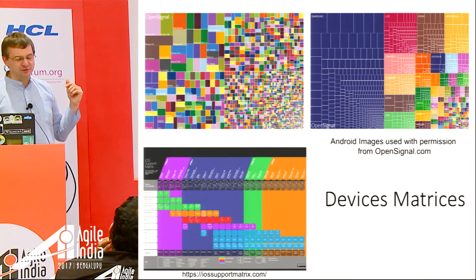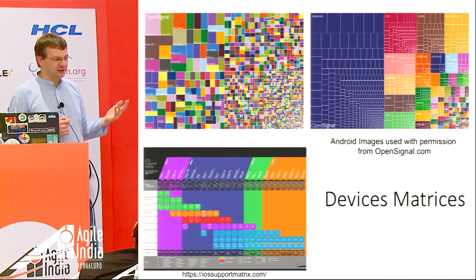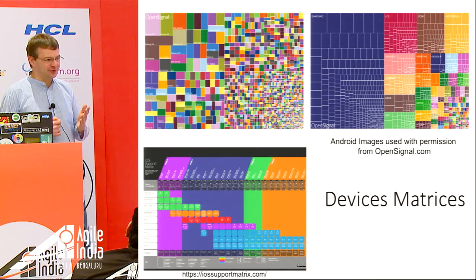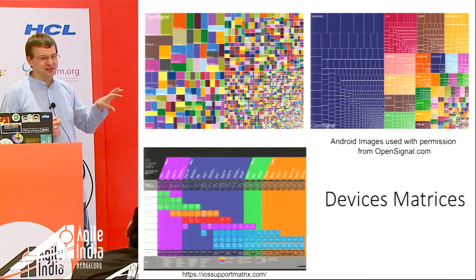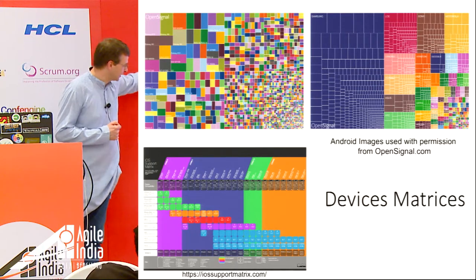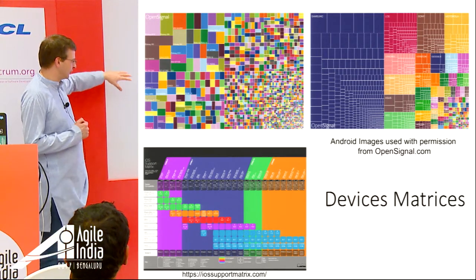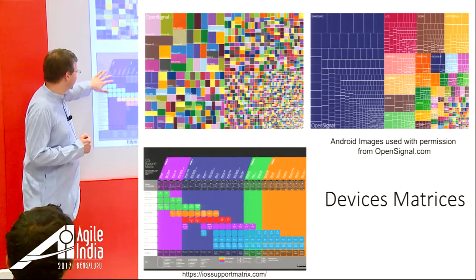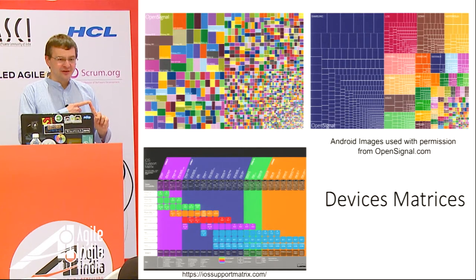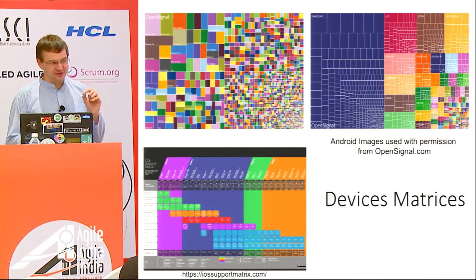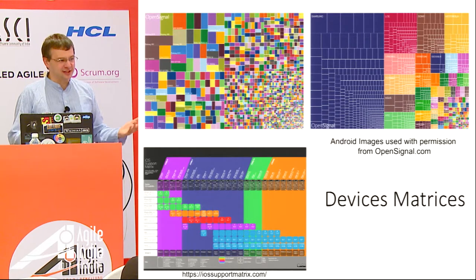For iOS devices, gone are the days when testing on your iPad and iPhone meant you were done. There's now a wide range of devices, OS versions, and hardware capabilities. With newer iPhones we have a fingerprint reader, which came in with the 5S model — the iPhone 5 had only a home button. If you don't know that and aren't thinking about testing it, it may make a difference.